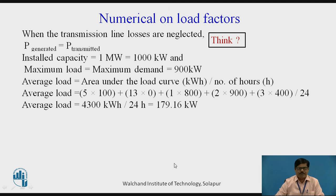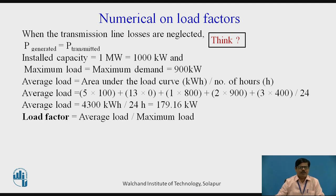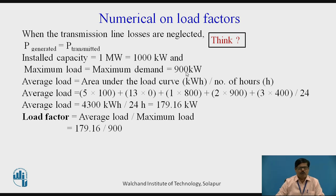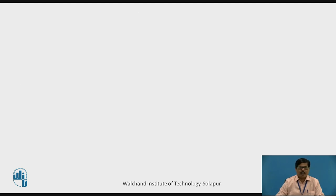Now we can find out the load factor, which is given by the formula: average load divided by maximum load. Average load is 179.16 KW, whereas the maximum load is 900 KW. When we calculate this, we get the load factor as 0.199, or 19.90%.